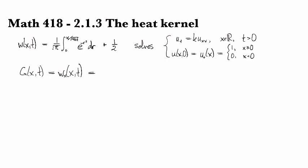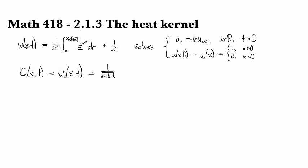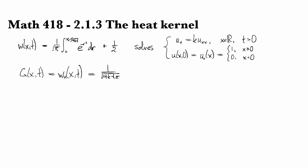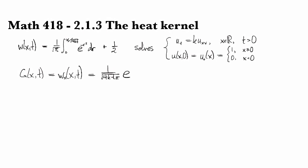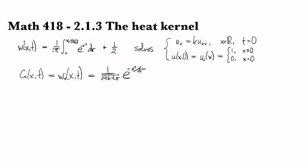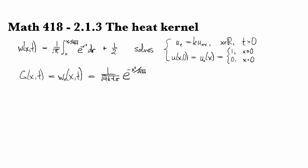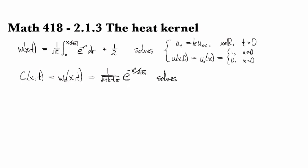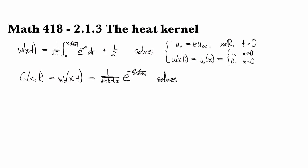Then we get 1 over square root 4kt pi, e to the minus x squared over square root 4kt. And so this then solves the corresponding Cauchy problem for a point source.